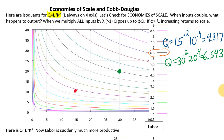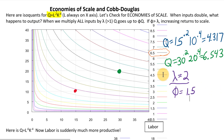Let's see how much our output went up: 6.543 divided by 4.317 gives a multiple of about 1.5. So in this example, lambda is 2 — we multiplied our inputs by 2 — and phi is equal to 1.5. The fact that we increased our inputs more than we increased our outputs means we have decreasing returns to scale, because lambda is greater than phi.